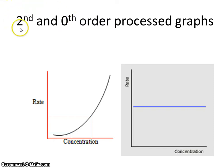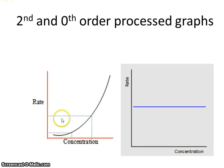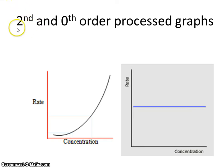First order is by far the most common order deduced from these processed graphs, but you should be aware of what second order and zeroth order would look like. A second order graph gives a curve — if you double the concentration, the rate goes up by a factor of four rather than two. A zeroth order graph is a horizontal line, where varying concentration has no effect on the rate at all.